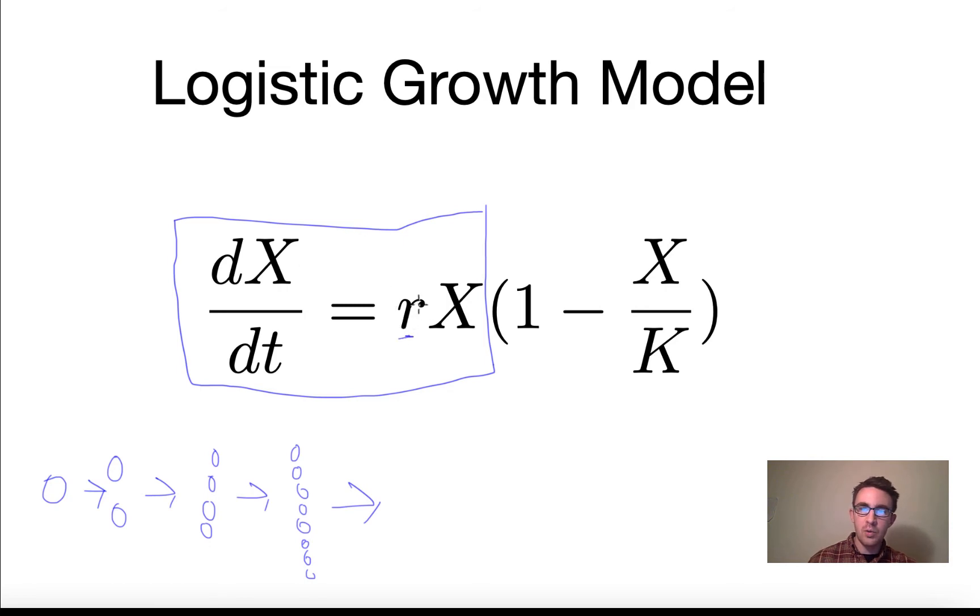That would sort of be the parameter for the speed of the doubling. And then the actual growth rate, this whole term here, would depend on the current size of the population. Because the bigger it gets,